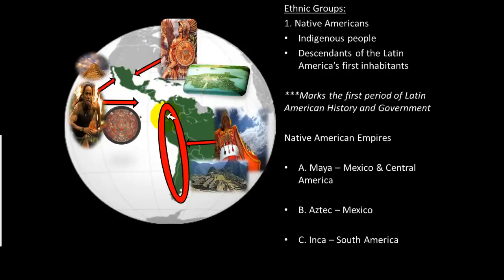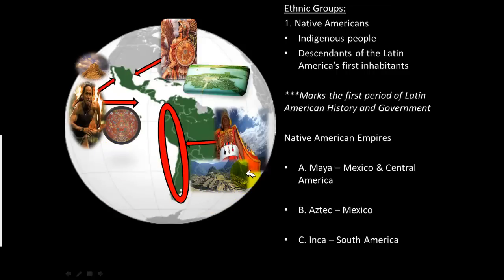The last empire we'll look at is the Inca Empire, which was very vast — it stretched along the Andes Mountains from pretty much the top of South America all the way to the bottom along the west coast. This is a picture of an Incan village; you can see the buildings are somewhat advanced, carved into the mountains. Because they lived in the mountains, they adapted well to that environment.